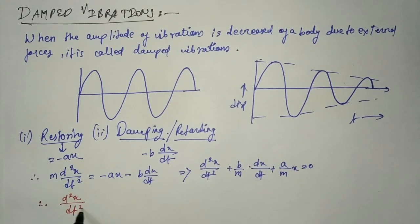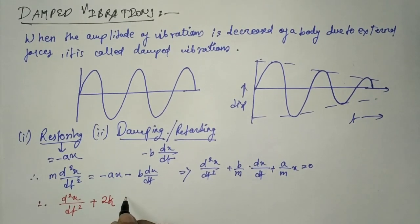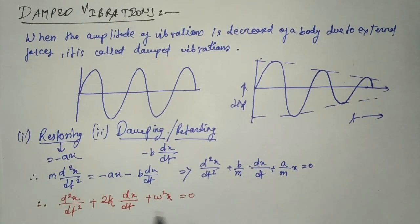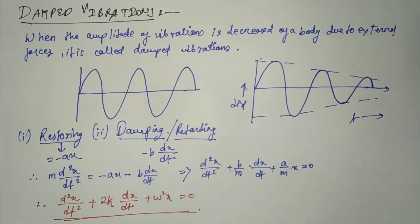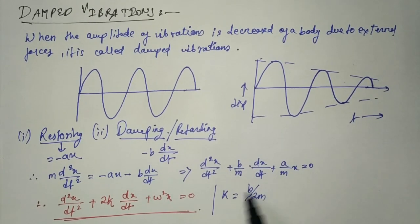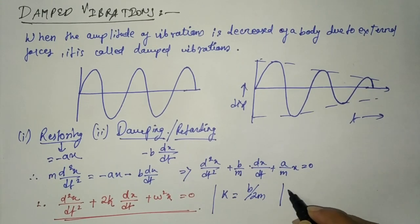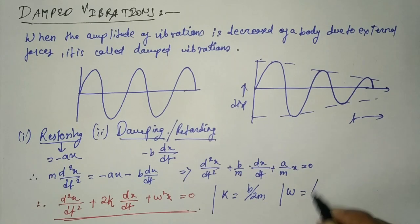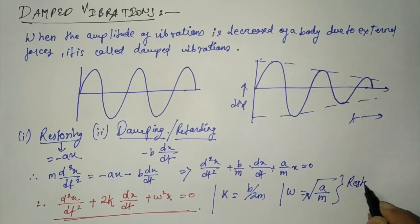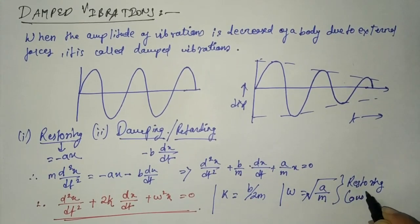Rearranging, we get: d²x/dt² + (b/m)(dx/dt) + (a/m)x = 0. The final differential equation of motion for a damped harmonic oscillator is: d²x/dt² + 2k(dx/dt) + ω²x = 0, where k = b/(2m) and ω = √(a/m), which is called the restoring constant.